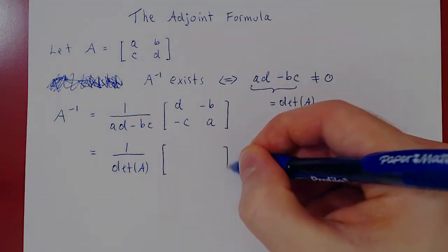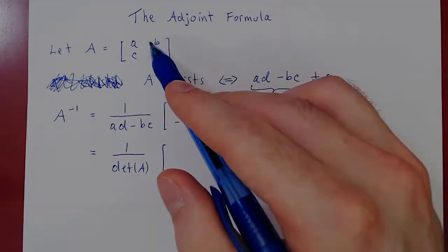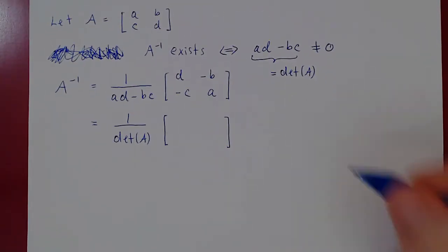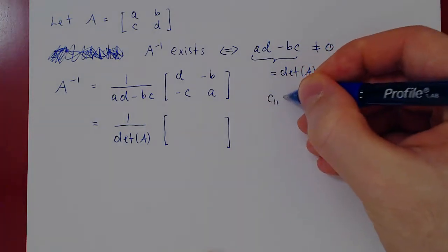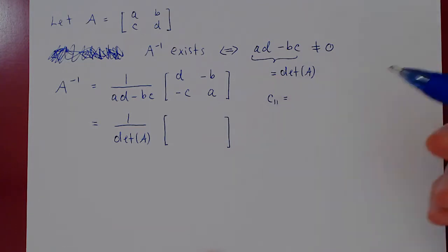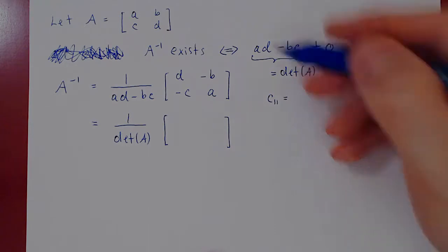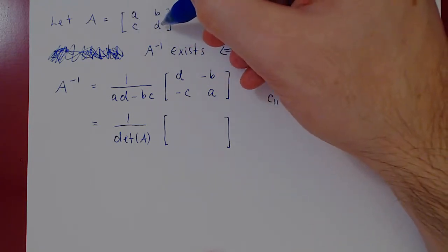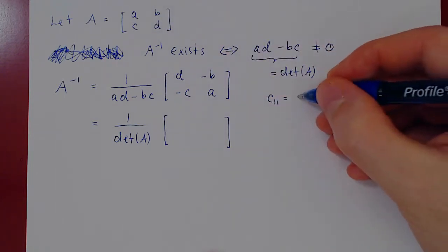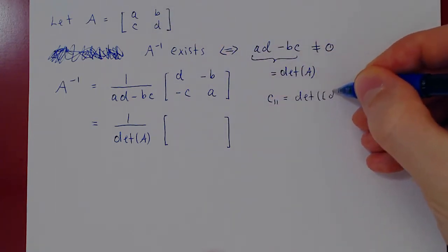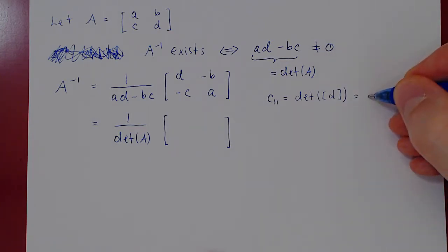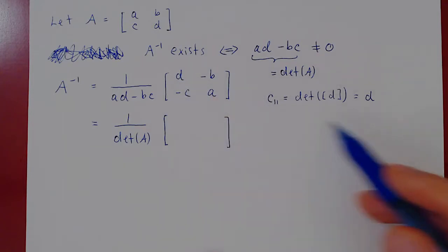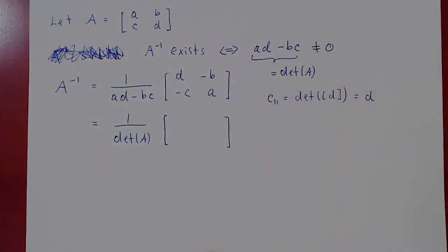What about the entries of this 2 by 2 matrix? Let's go back to A and compute its 4 cofactors, each one for the particular entry. C11: negative 1 to the power 1+1 is positive 1. That is the determinant of the matrix obtained from A after we delete row 1, column 1. If you delete row 1, column 1, you have the determinant of the 1 by 1 matrix D. The determinant of a 1 by 1 matrix is simply the entry itself, so C11 is D. We can replace D by C11, because the cofactor C11 makes sense for any square matrix.